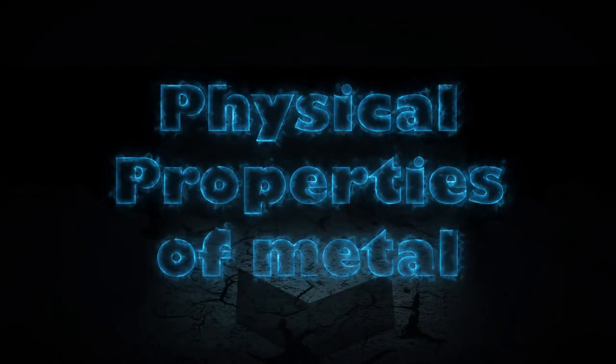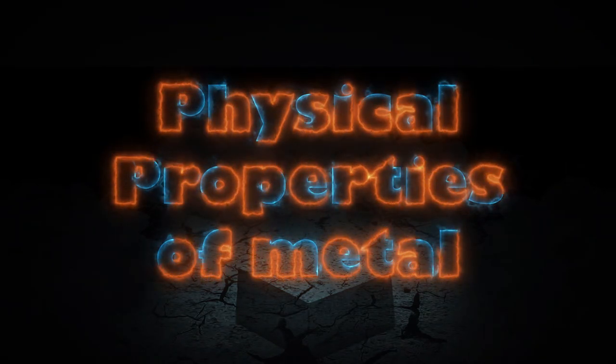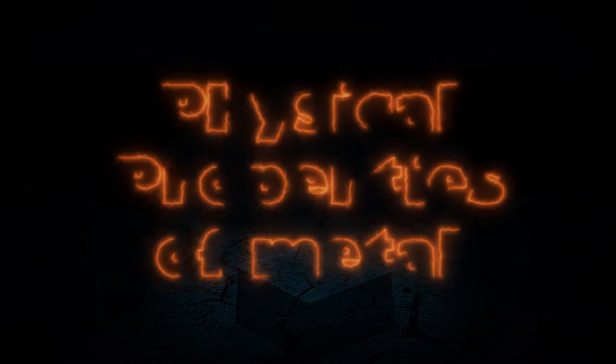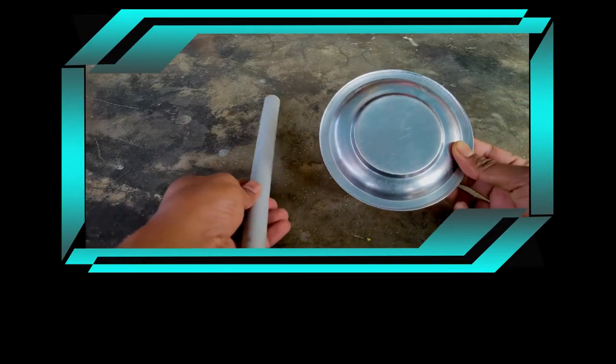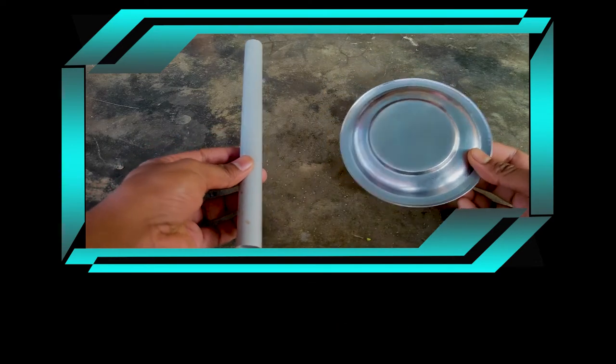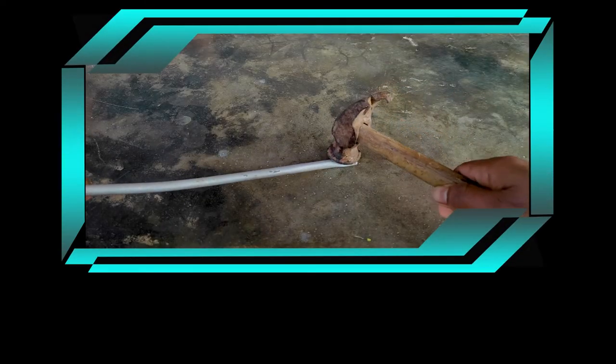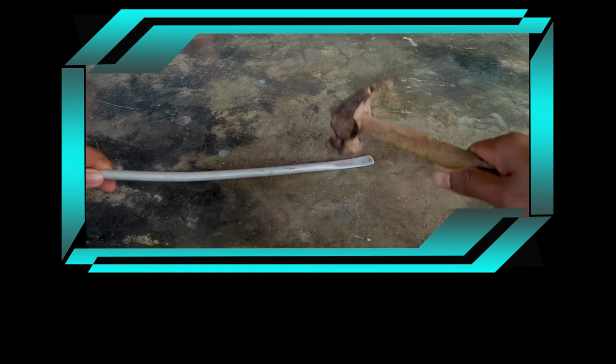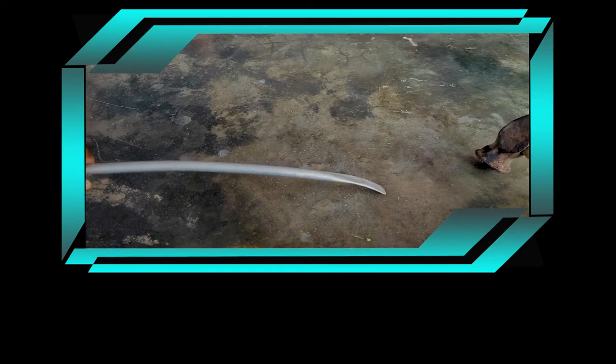Dear students, we have already discussed some of the physical properties of metals in the previous classes. Let's recall those. The surface of metals are shiny, which means they have a metallic luster. Metals can be beaten into thin sheets. This property is called malleability.